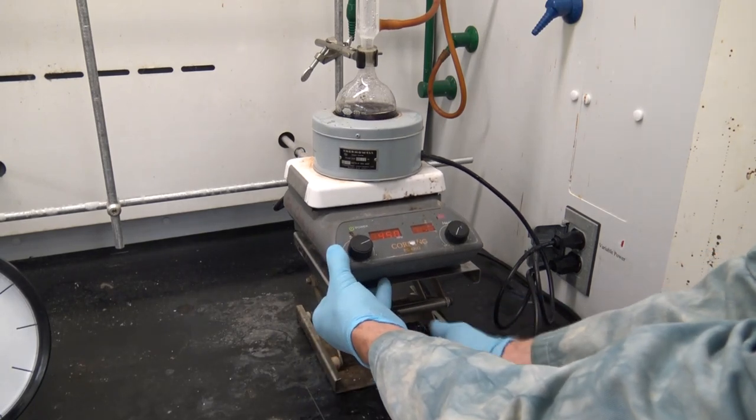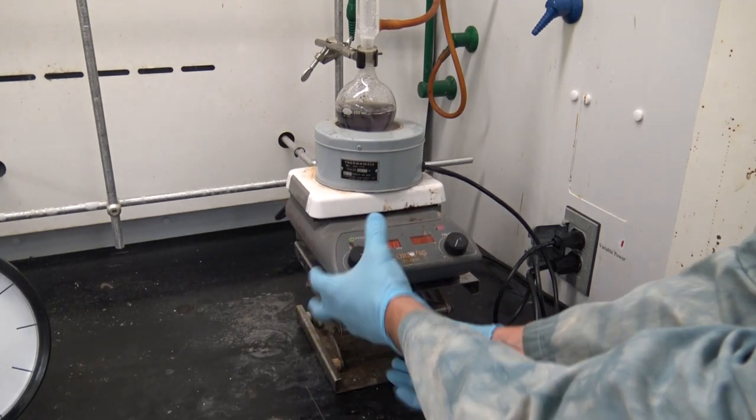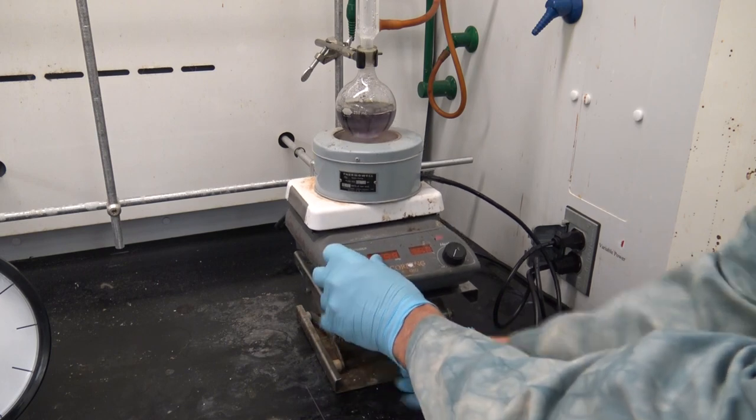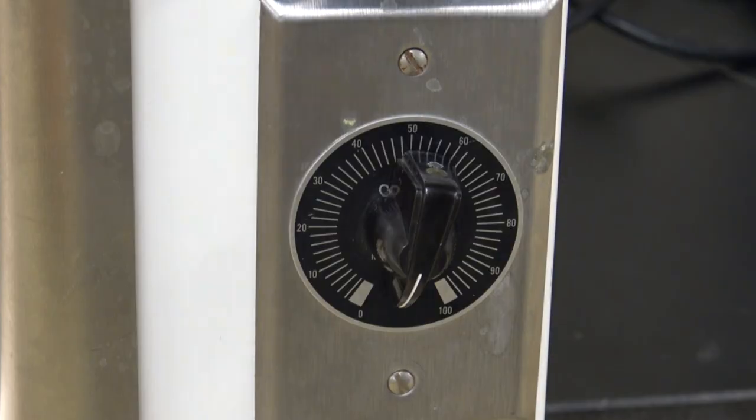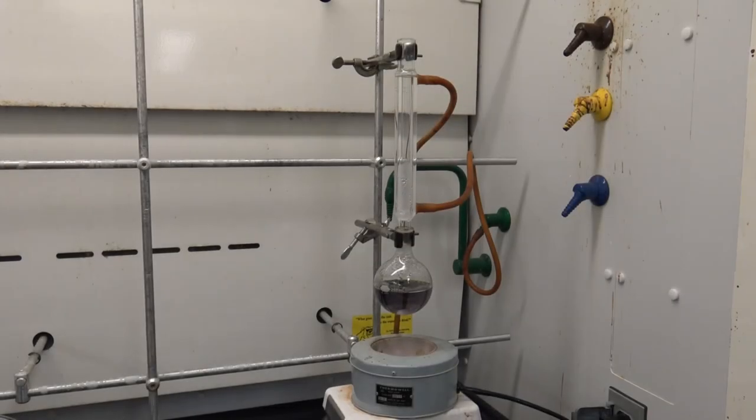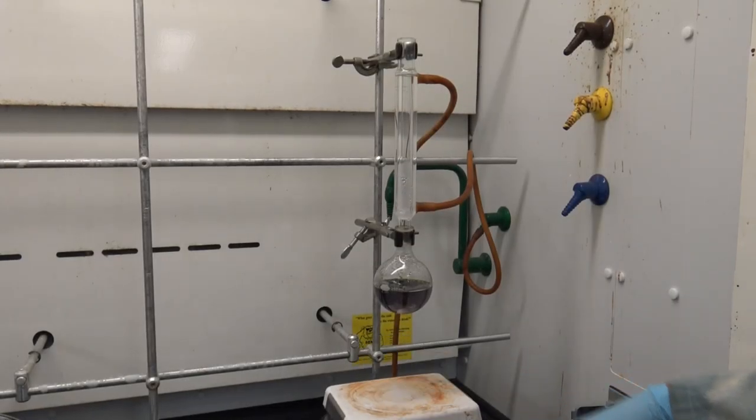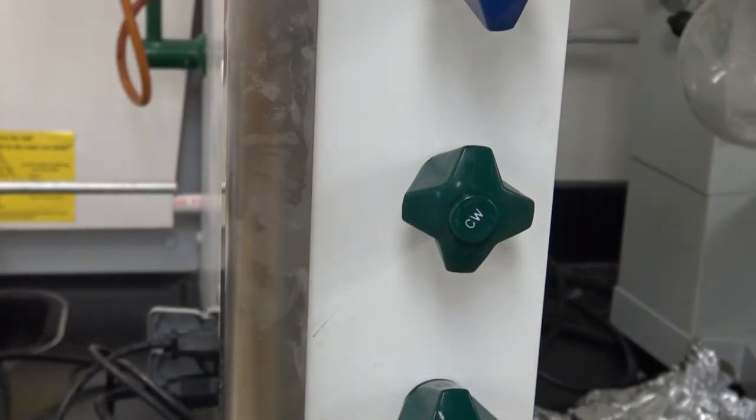To prove this, I'm going to remove my heat source by first lowering my lab jack, and then deactivating my thermal well by turning off the Variac. Once things are cool, I can remove that heat source, and then recover my sample.